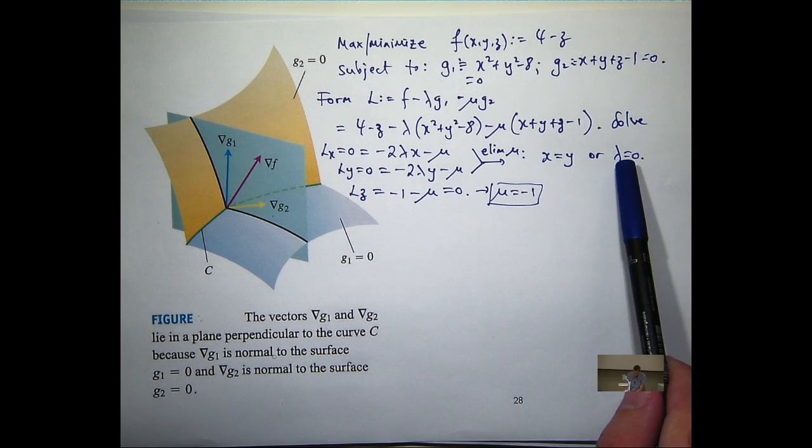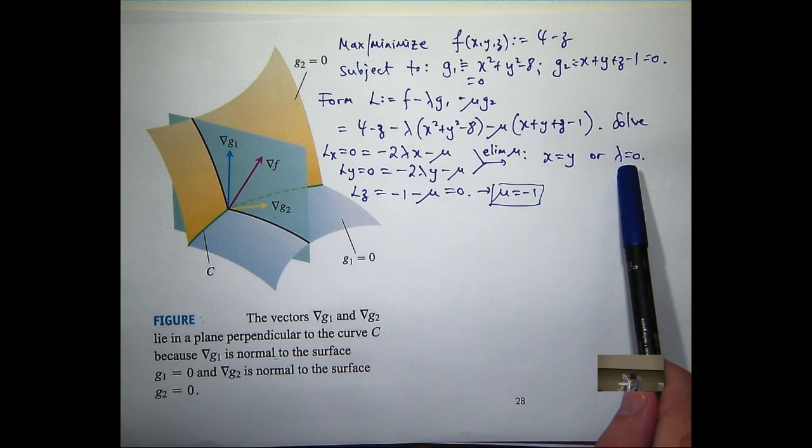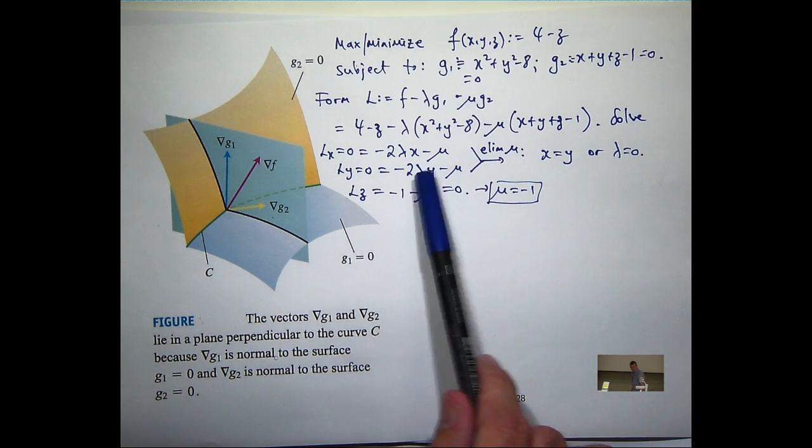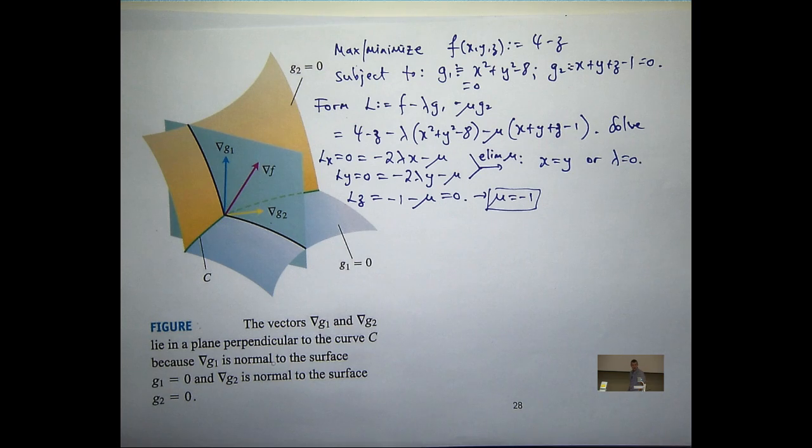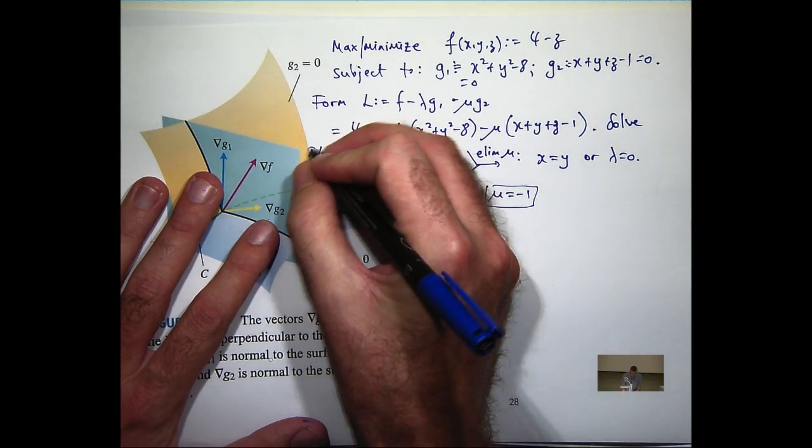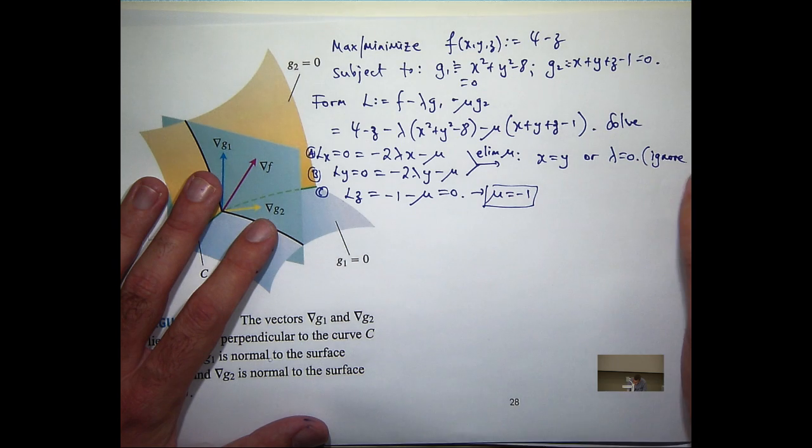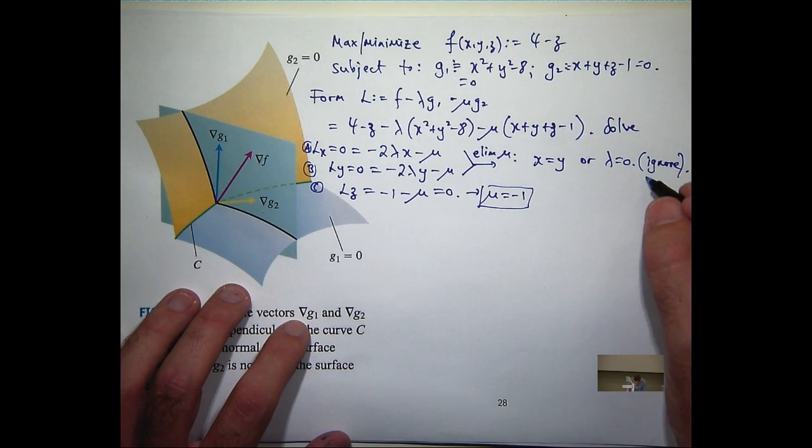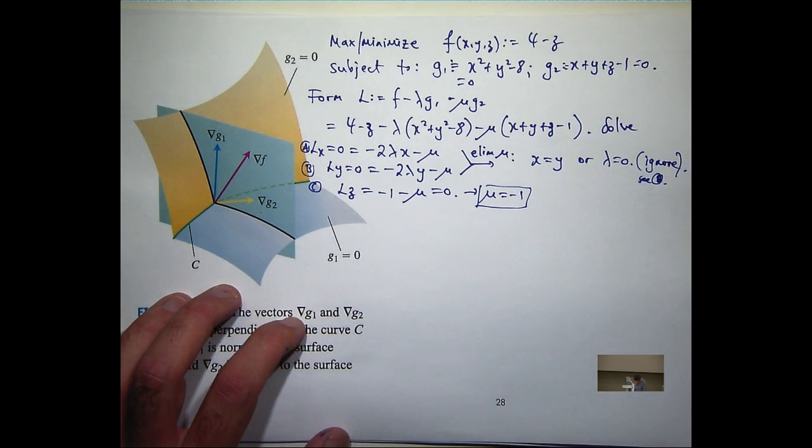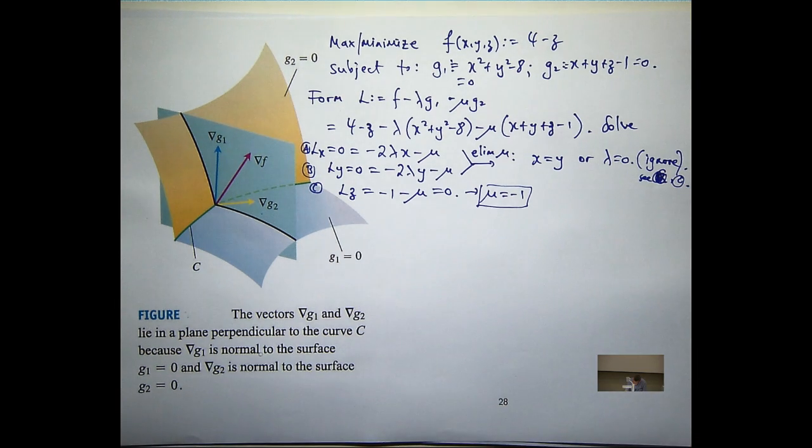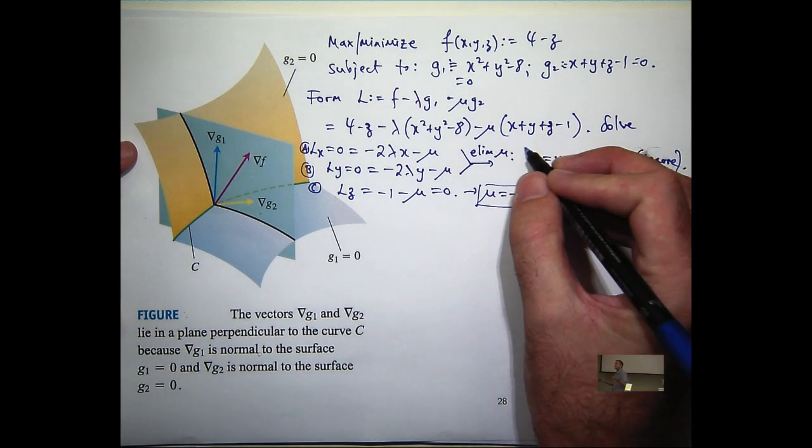Now, can anyone tell me why I can rule out the case lambda equals 0? If I put that into this equation, if lambda equals 0, what does that mean mu's got to be? 0. But hang on, mu's minus 1. So, I can rule out the case lambda equals 0. So you can ignore that and just see equation B and C. They're inconsistent.